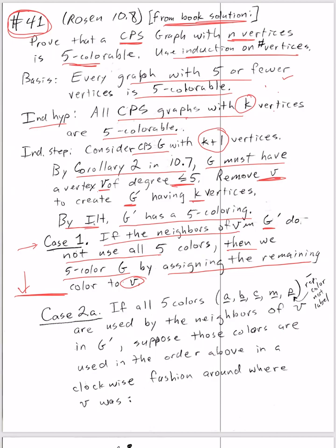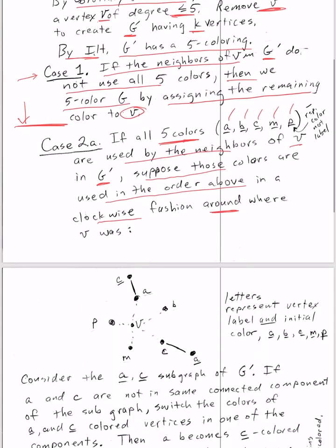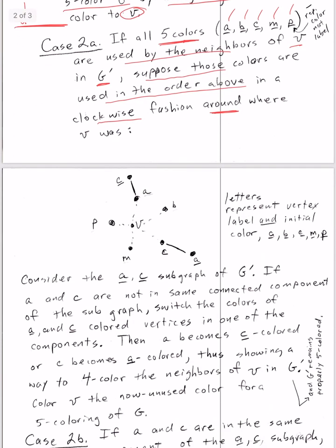Case 2a: if all five colors, and the book calls them azure, blue, chartreuse, magenta, and purple, and I'll use the initials with the underlining to represent color, not label. If all five of those colors are used in the neighborhood of v and g prime, let's suppose that those colors are used in the order above in a clockwise fashion around where v was. I'll go to the next page, and here's an illustration of that.